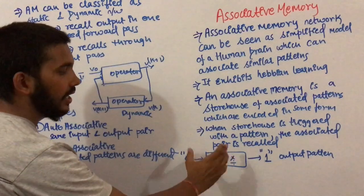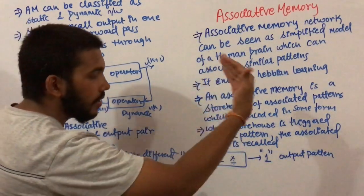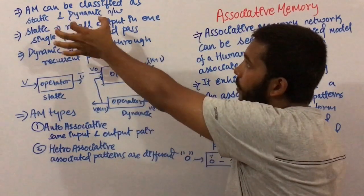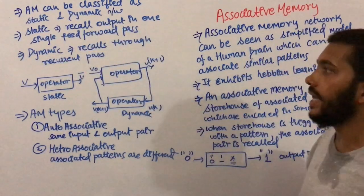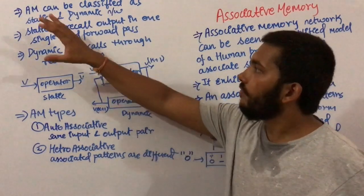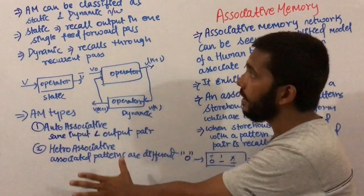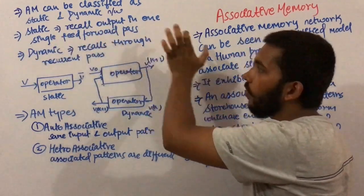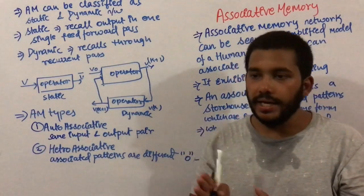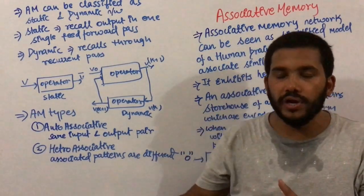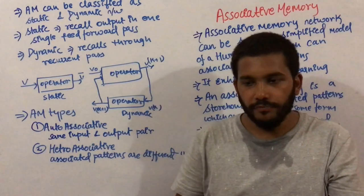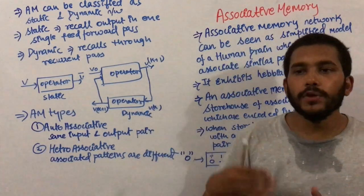Associative memory can be classified into two parts: static and dynamic. In static associative memory, it recalls output in a single feed-forward pass. When you give an input, in one run you get the output — like if you recall Sachin Tendulkar, in one feed-forward pass you will recall how many centuries Sachin Tendulkar has scored.